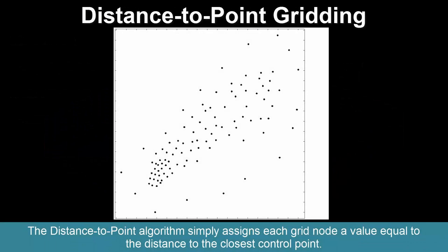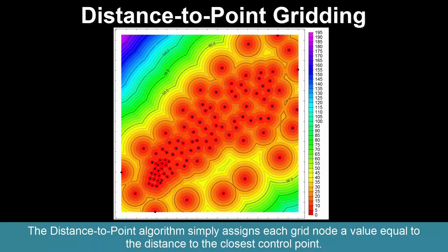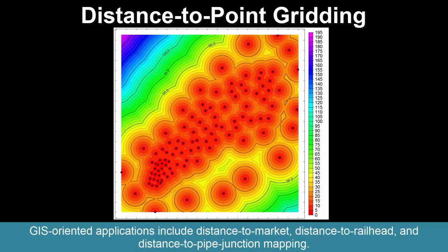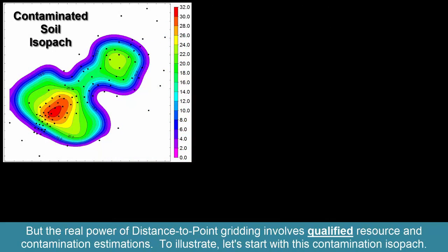The distance to point algorithm simply assigns each grid node a value equal to the distance to the closest control point. GIS-oriented applications include distance to market, distance to railhead, and distance to pipe junction mapping. But the real power of distance to point gridding involves qualified resource and contamination estimations.